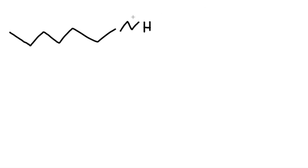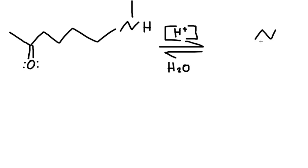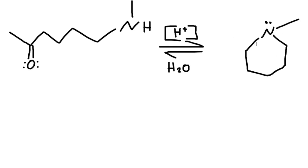Now let's do another example, but this time the secondary amine is on the structure itself, not added separately, so we get a different kind of product. Same reagents — acidic conditions and water. The secondary amine on the structure has a lone pair, it attacks the carbon, and forms a six-membered ring. We know it's a secondary amine. The double bond goes to a specific position, which I'll show in the mechanism.